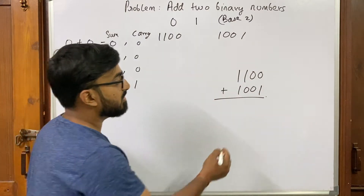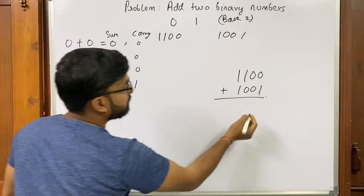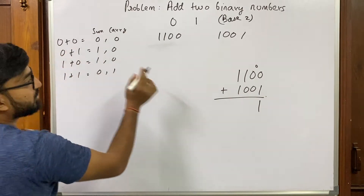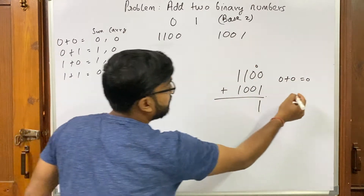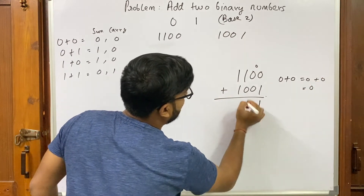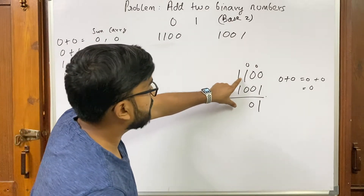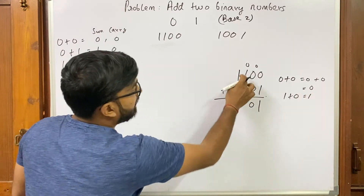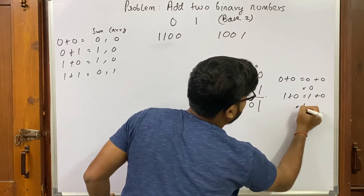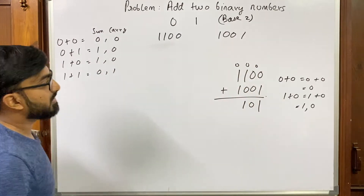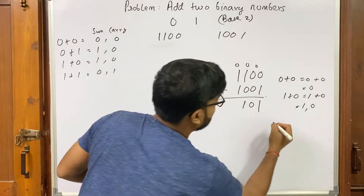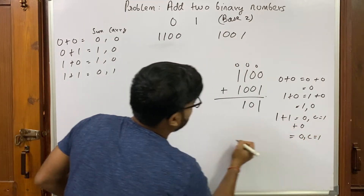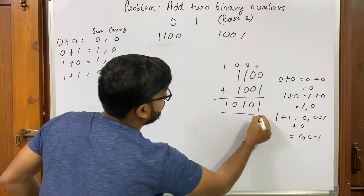Let's use these rules to add 1100 and 1001, just as we do regular addition, starting from the right going towards left. Zero plus one gives one with carry zero. Next, zero plus zero with previous carry zero gives zero, carry zero. Then one plus zero plus carry zero gives one, carry zero. Finally, one plus one gives zero with carry one, and zero added from previous carry stays zero, carry one. The final carry is appended, giving us the result.